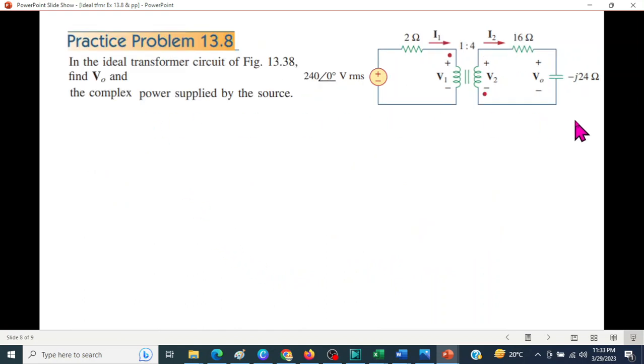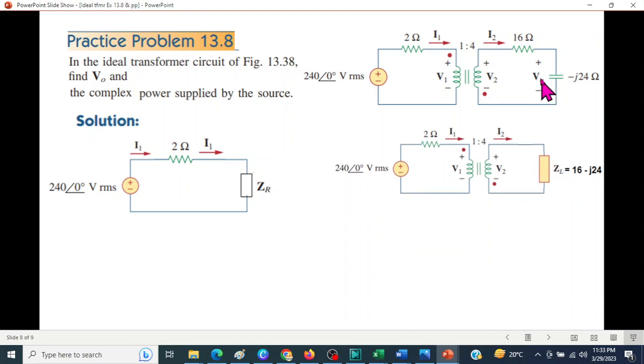Now, come to practice problems. Similar exactly. Here only we need to find V out and the complex power. Following same technique. One point, we have to be careful now that this is also included in the load. Not only this is load, but 16N, J24 will make the load. We are converting this to the primary side. But before that, we have to establish what is ZL. ZL is 16 minus J24. And now we can convert to ZR using the formula. ZL divided by N is 4. 4 square is 16. So ZR is 1 minus J1.5. And now we can find current easily from here. Current is 240 divided by the total impedance. 71.5, angle 26.